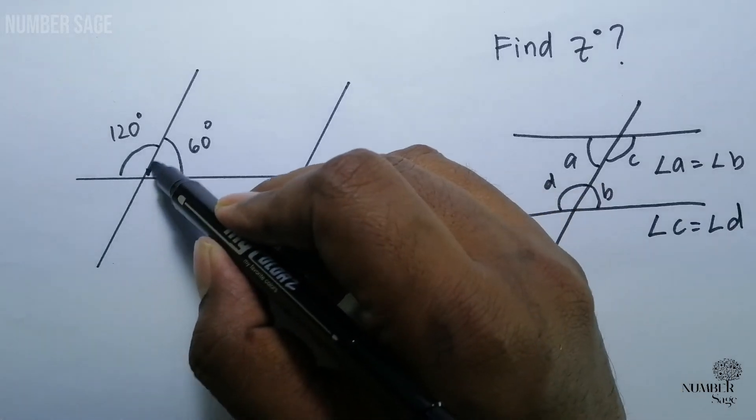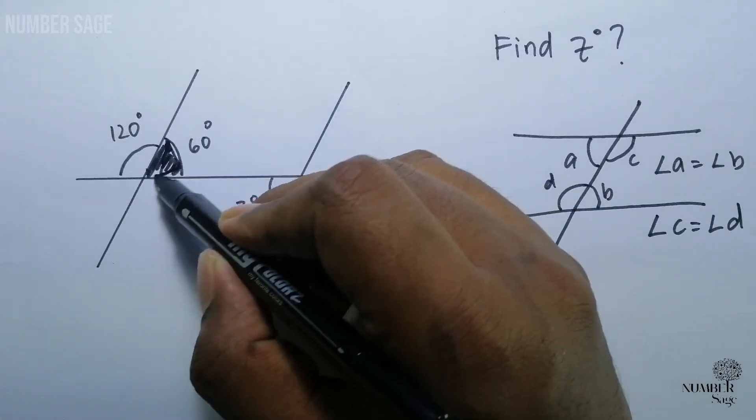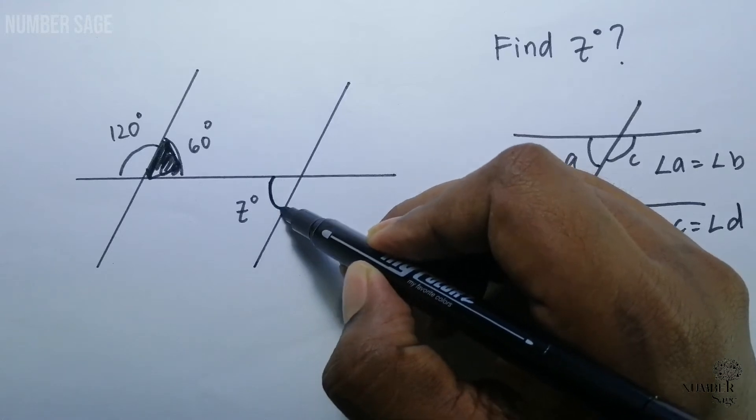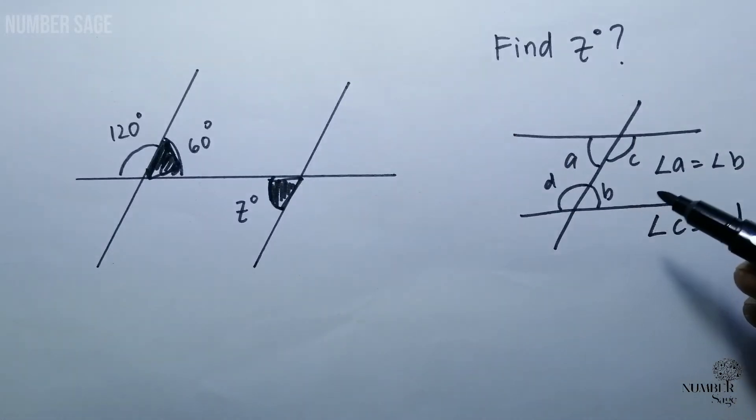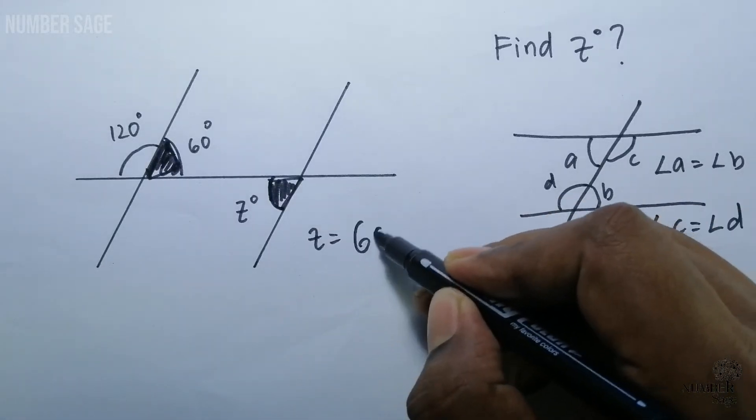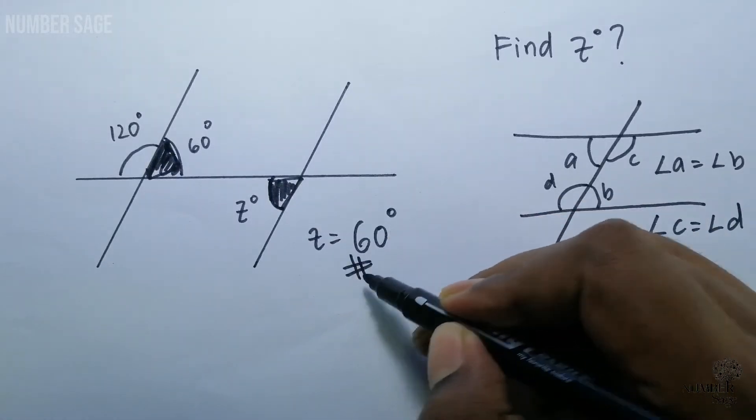The same concept can be applied whereby this angle will be equivalent to this angle since there are alternate angles. Hence the answer would be z is equals to 60 degrees.